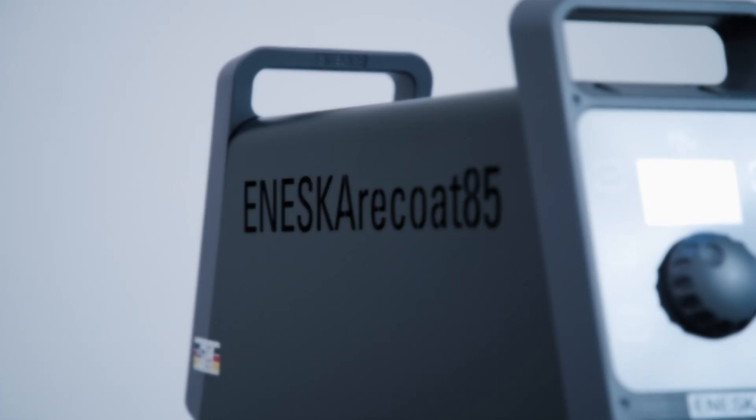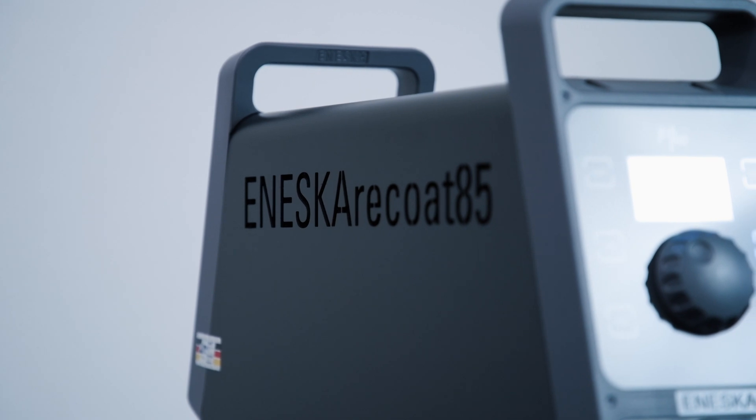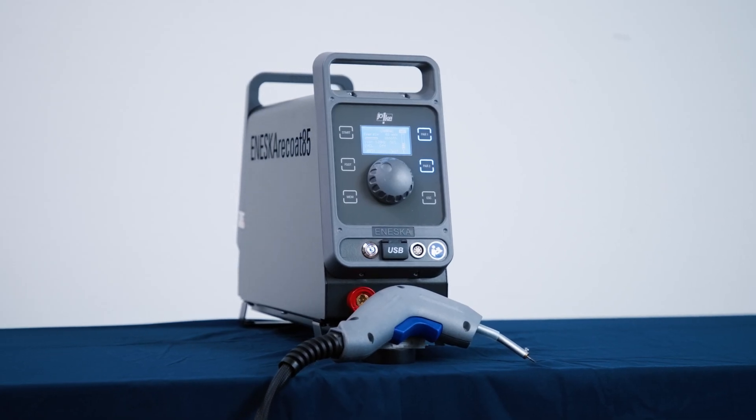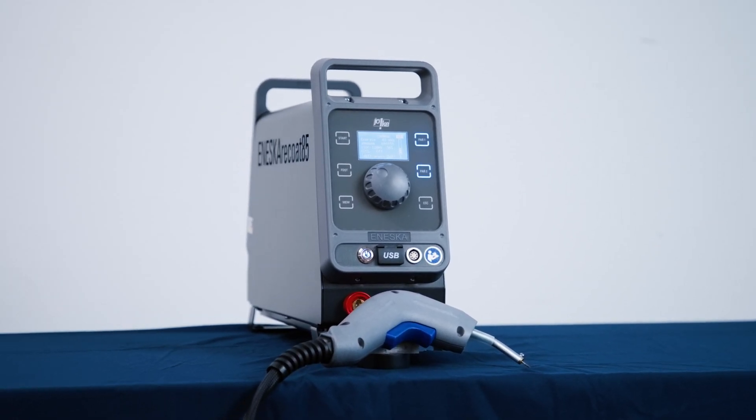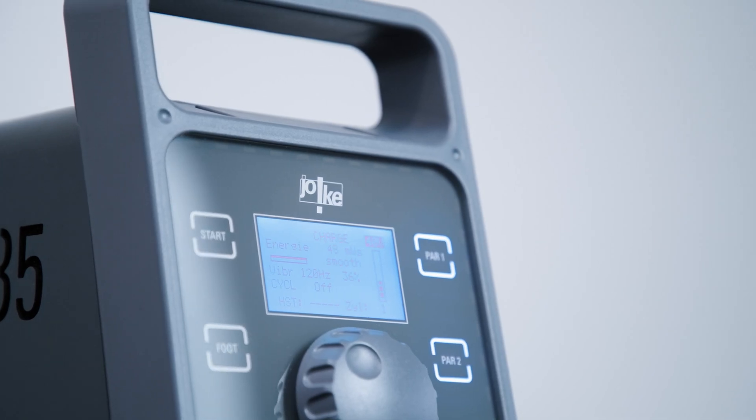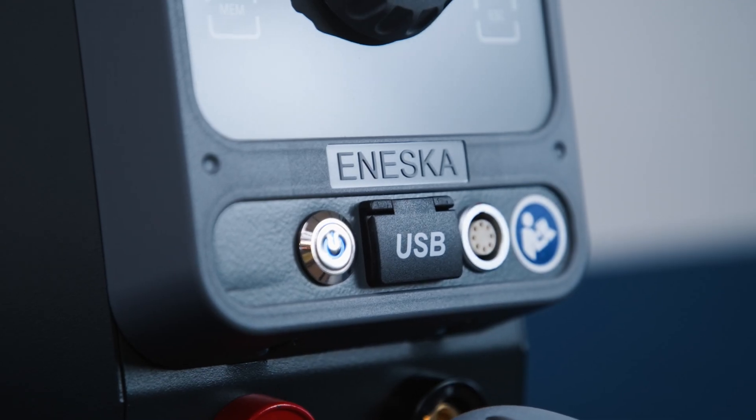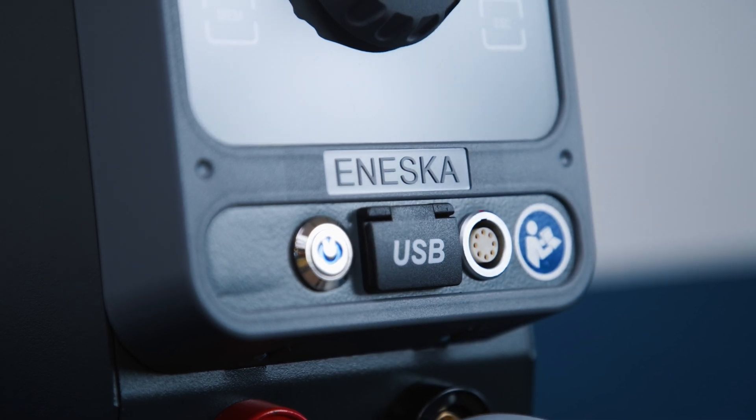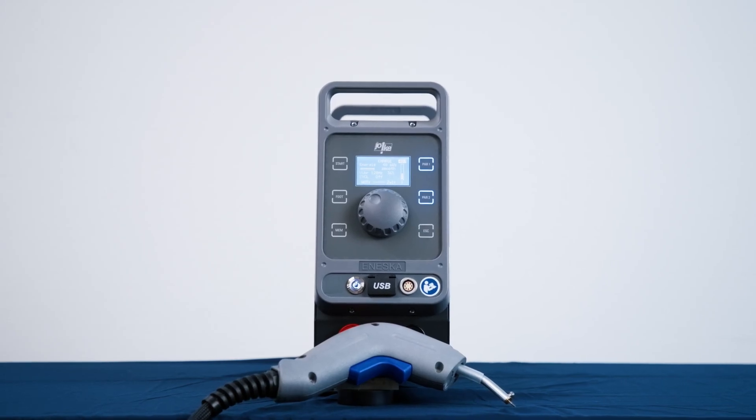With the ANESCA ReCoat 85, Yoka Technology presents a completely new generation of carbide coating devices with high-tech character. The device is used for the simple and fast coating of heavily stressed surfaces by applying a hard metal layer.